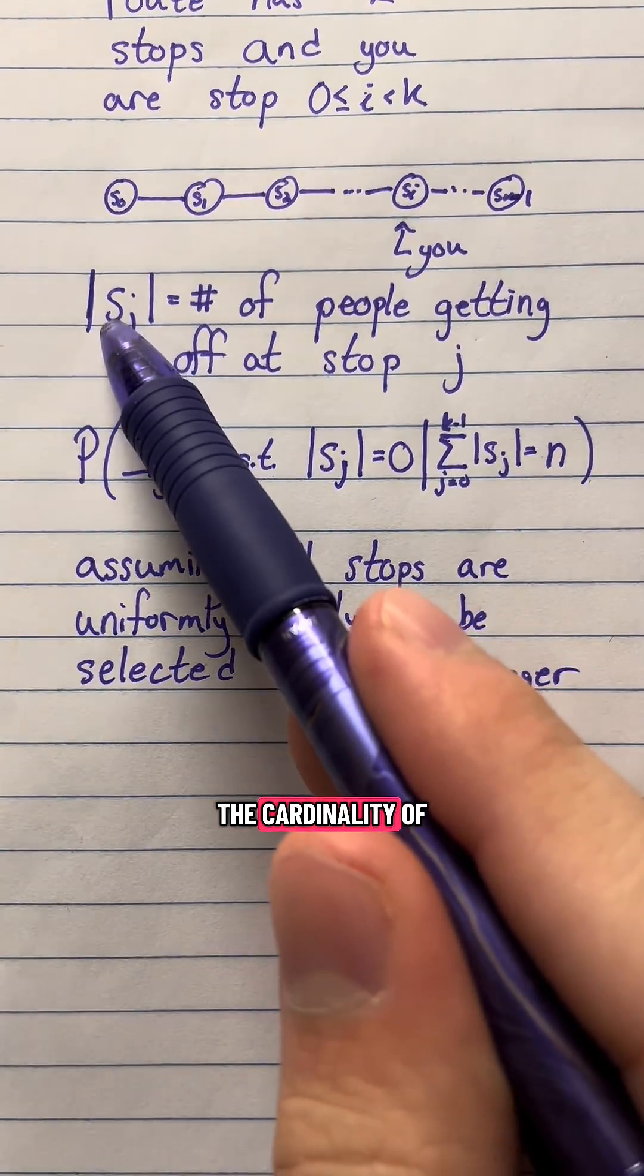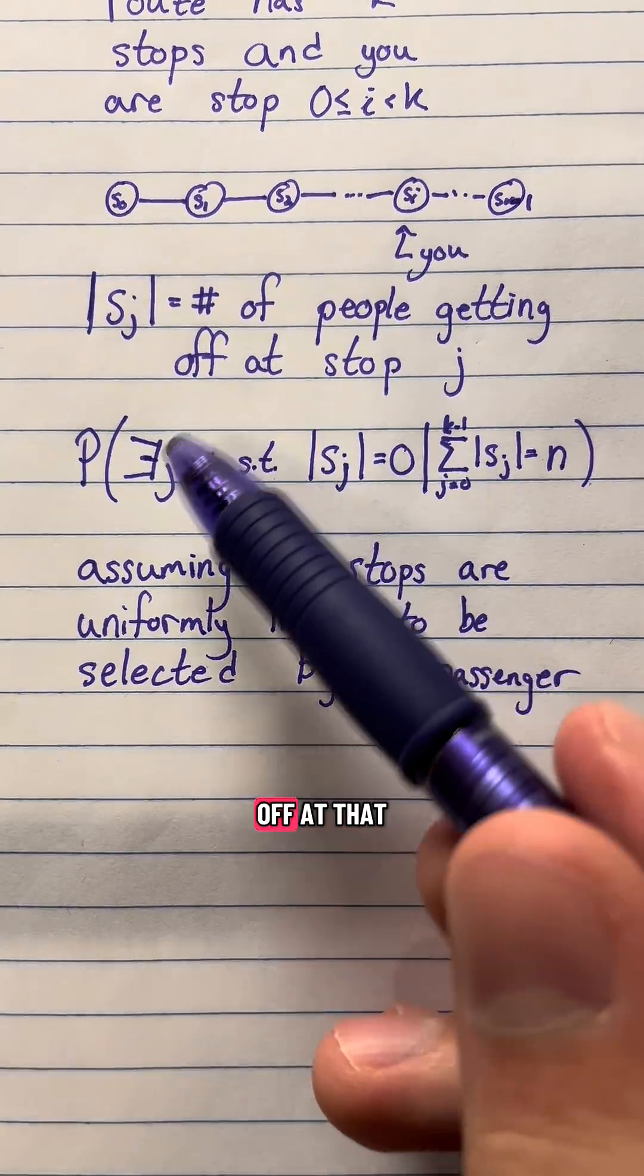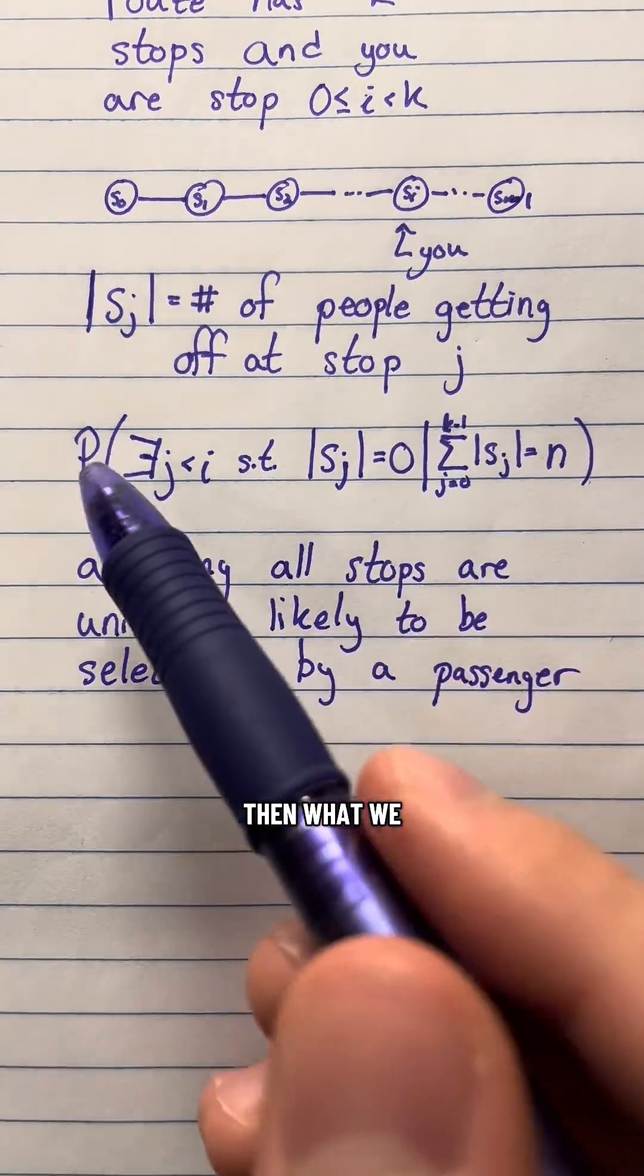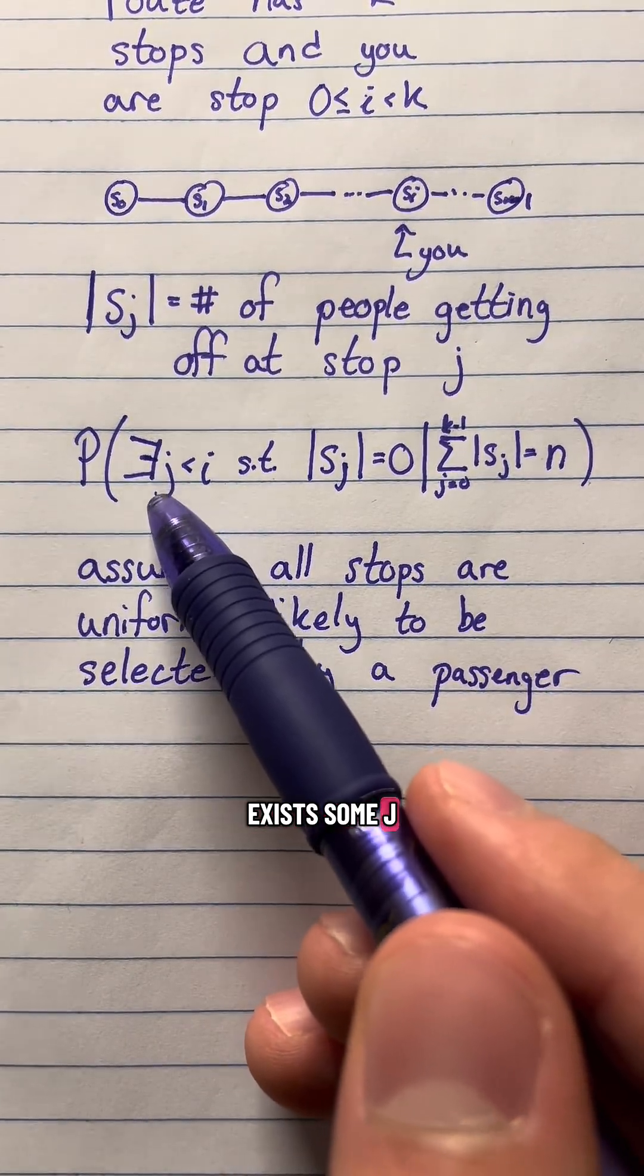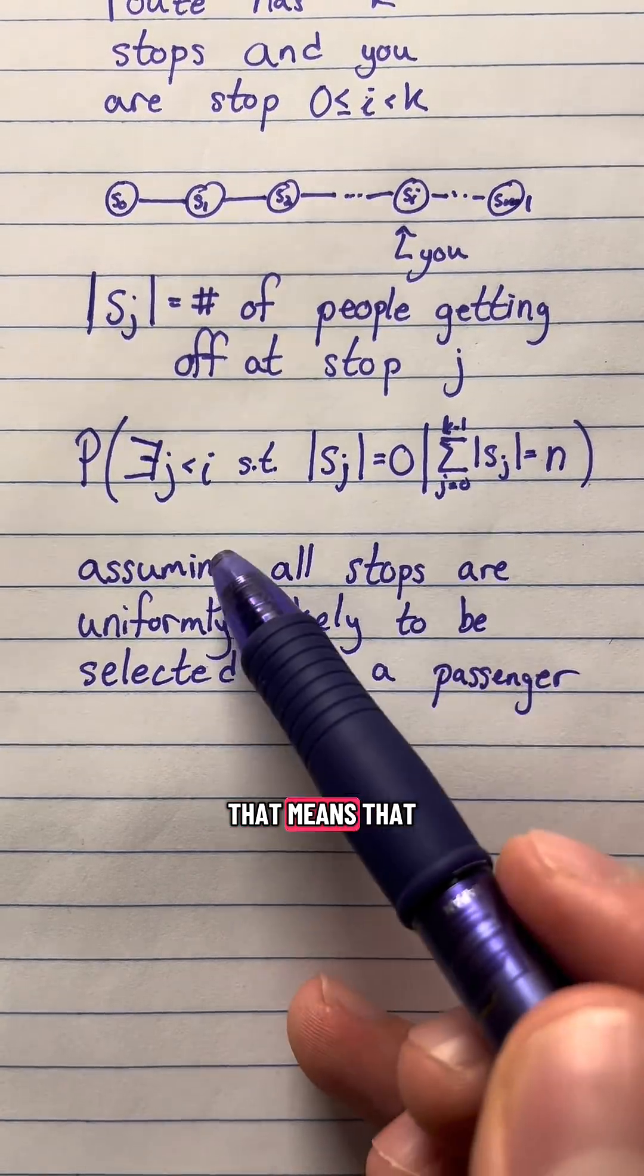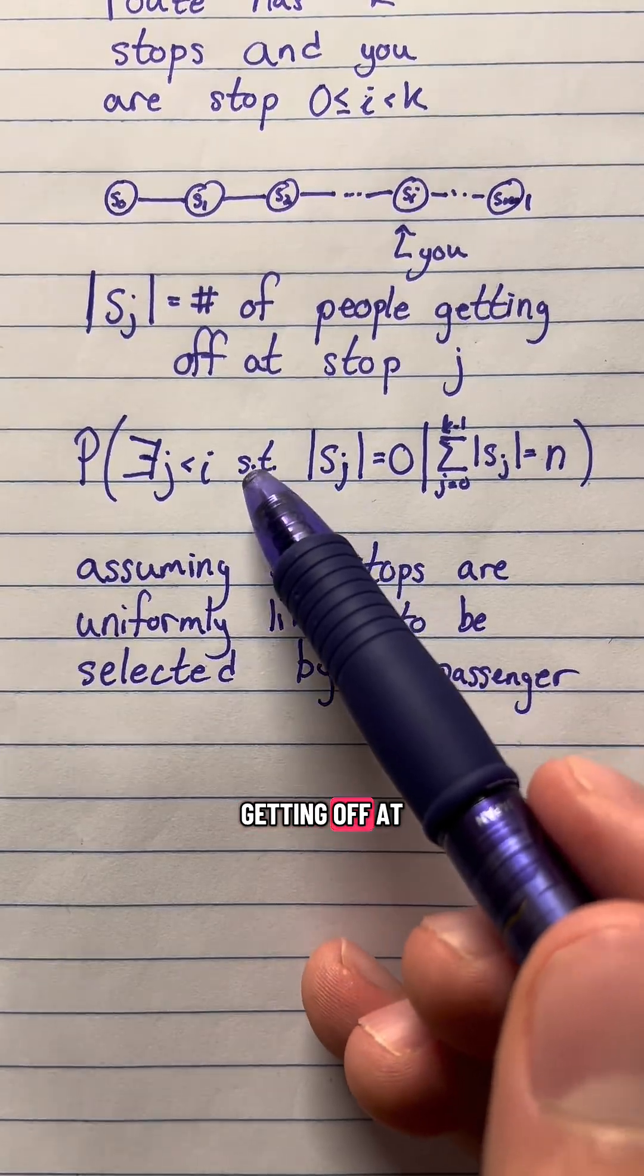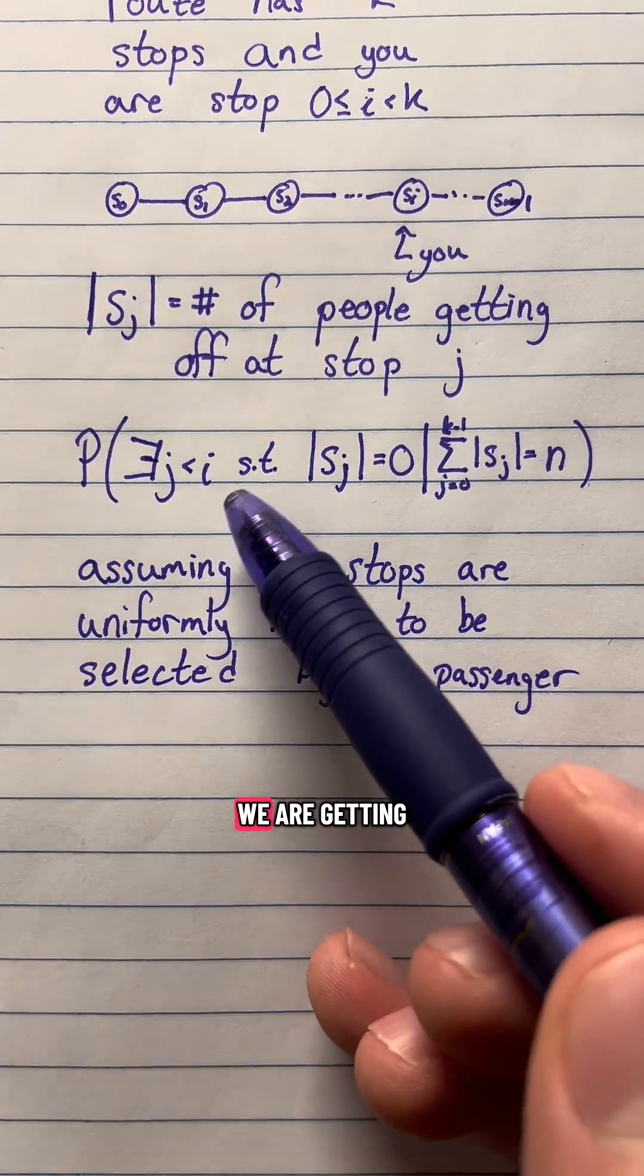If we define the cardinality of some stop sj to be the number of people who are getting off at that stop j, then what we are looking for is what is the probability that there exists some j where the stop j has a cardinality of 0. That means that there is nobody getting off at that stop and we want j to be less than i because i is the stop that we are getting off at.